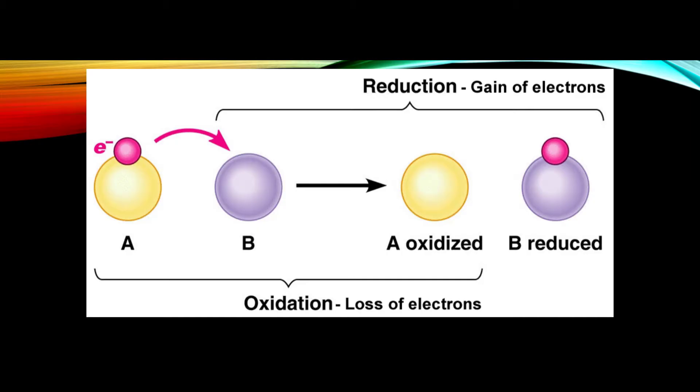Oxidation-reduction, or redox reactions, occur when one molecule loses electrons — that's oxidation — and the other molecule accepts electrons — that's reduction.